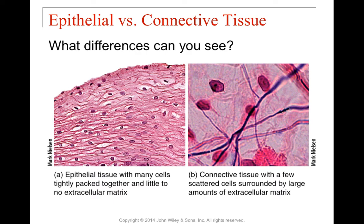We'll be looking at epithelial tissue, connective tissue, nervous tissue, and muscle tissue, but let's just take a look at epithelial and connective tissue now and make some obvious generalizations. Some of the first differences you can see: epithelial tissue has small cells, many cells packed tightly together, very little extracellular matrix, and more organized complexity. Connective tissue has much larger cells, scattered somewhat randomly, surrounded by large amounts of extracellular matrix molecules. These nuclei are larger, and epithelial and connective tissue are pretty much easily distinguishable on the spot.